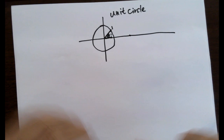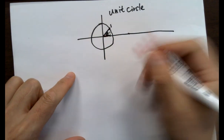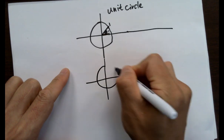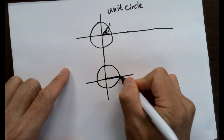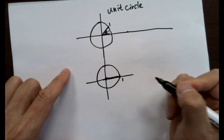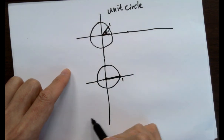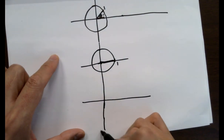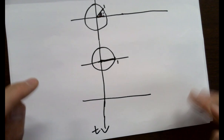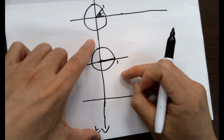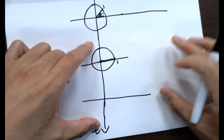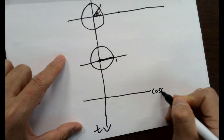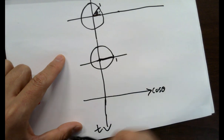Let's go through this quickly. Here's the bar, starting from the origin, radius is one. I'm drawing another cosine plane — this is T. Even though I connect them, they are not in the same plane. Keep that in mind. This is the cosine theta axis. This is T.